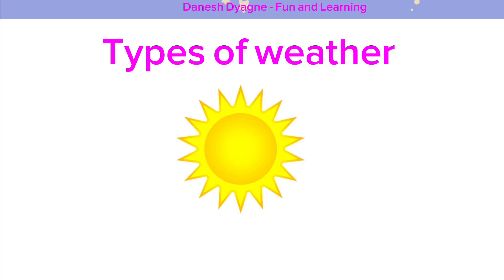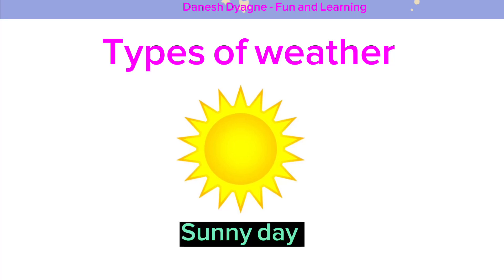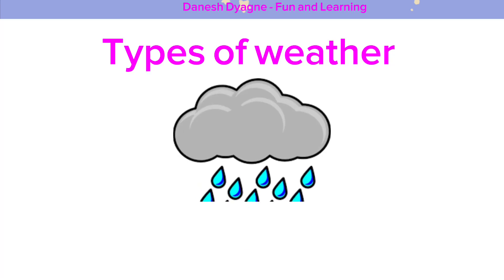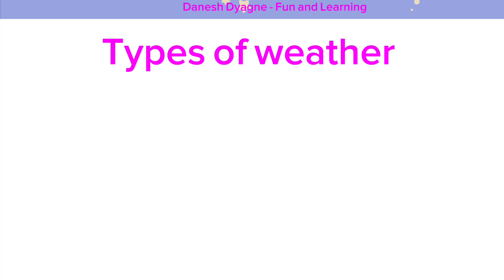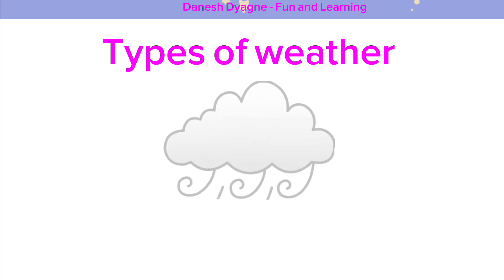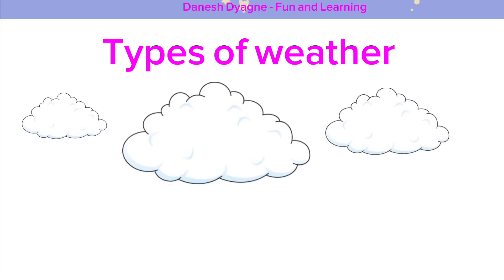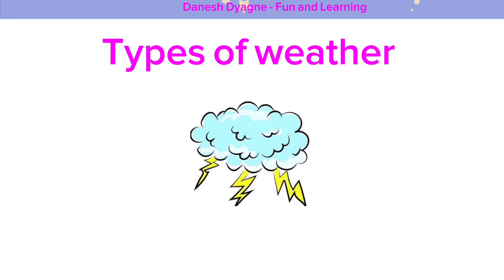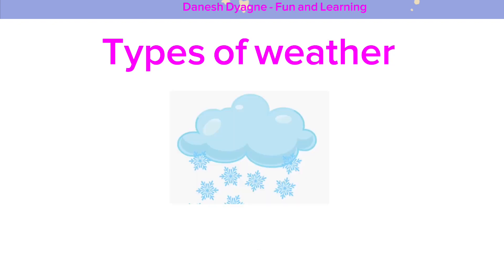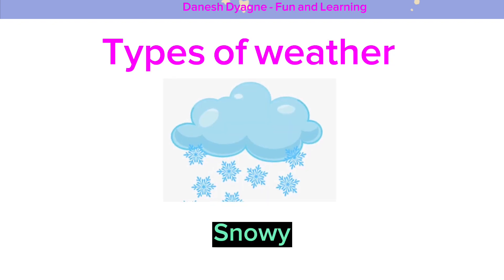So kids, can you guess the weather? It's a sunny day. Rainy day. Windy. Cloudy. Snowy. Stormy. Snowy.